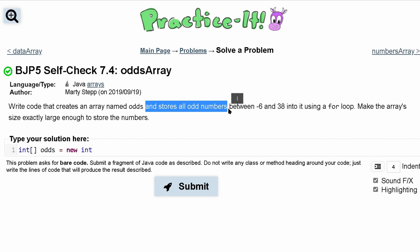And it stores all odd numbers between negative 6 and 38 into it using a for loop. We want to make the array size exactly large enough to store the numbers. So if we are going between negative 6 and 38, what we can do is just add 6 and 38 together. This is going to give us a total of 44. And once we have our 44, we can actually divide this by 2, and we should have a size of 22. So we should have 22 odds in here.